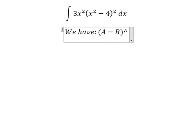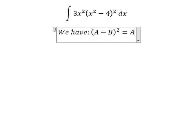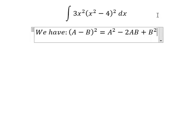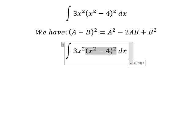We have the formula: (A - B)² = A² - 2AB + B². Now we need to expand this one.